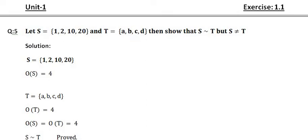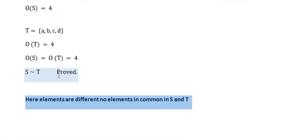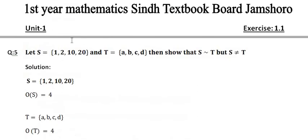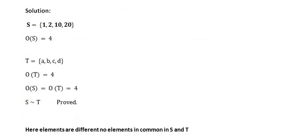Now, S is not equal to T. Yes, S is not equal to T because the number of elements are the same but the elements are different. You can see: here 1, here a; here 2, here b; here 10, here c; here 20, here d. The number of elements are the same but the elements are different, that's why S is not equal to T.